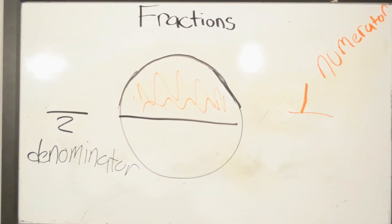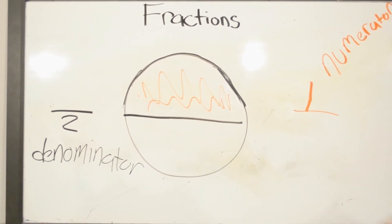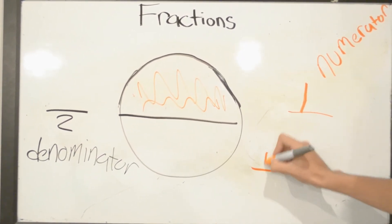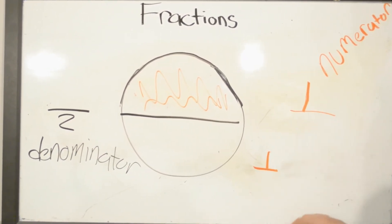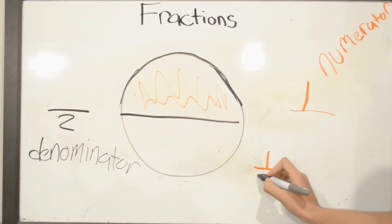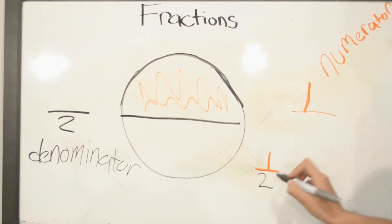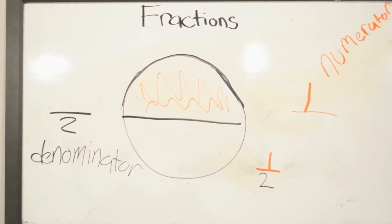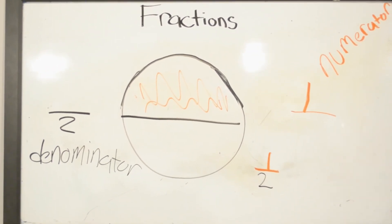So now we write a fraction as 1 over 2. And this is how you write down fractions.